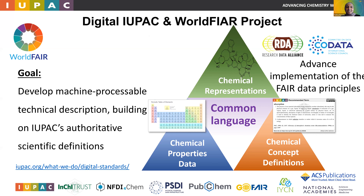So briefly, what is digital IUPAC and what do we do in the World for Chemistry project? IUPAC has for many years been translating chemical standards into the digital domain, with the goal of developing machine-processable and readable depictions. The three main pillars IUPAC focuses on are chemical representation, chemical concept definitions, and chemical properties and data. Since last June, there is a new global initiative called the World FAIR project, funded by the European Commission, coordinated by the RDA and CODATA.